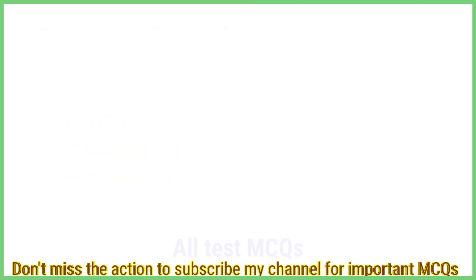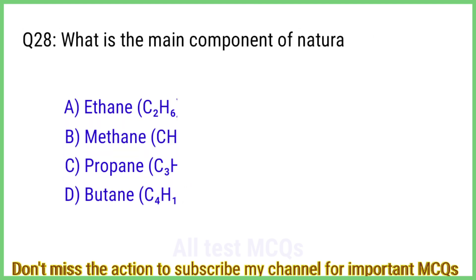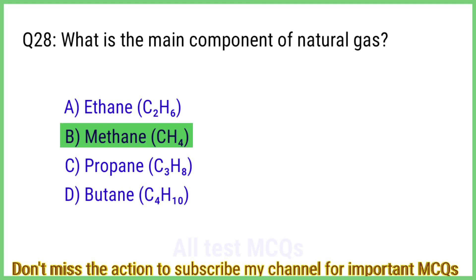Question number 28. What is the main component of natural gas? The right answer is option B: Methane, CH4.